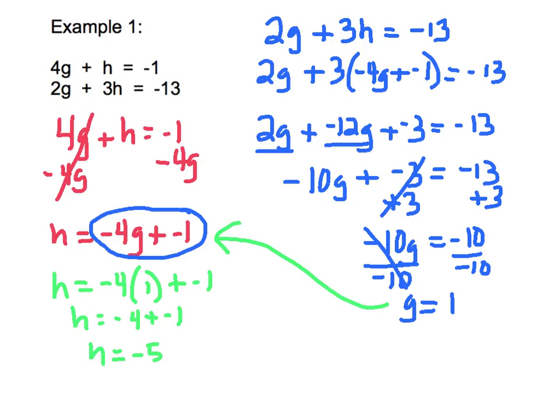Step 5 is to write our solution as an ordered pair. Now one thing to note here, when we're not using x and y, or even if we are using x and y, we always want to write our ordered pair in alphabetical order. That means whichever letter comes first in the alphabet is going to come first in our parentheses. So, g comes before h alphabetically, so I'll write my ordered pair as 1 comma negative 5, and that's our solution.